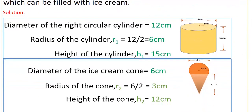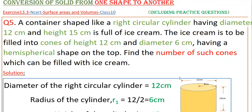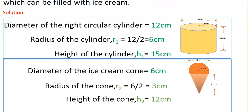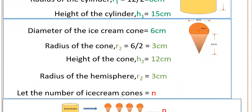So here these are the ice cream cones. The dimensions of the ice cream cone: the diameter is 6 cm, so diameter of the ice cream cone is equal to 6 cm. Therefore radius of the cone R2 is equal to diameter by 2, that is 6 by 2, equal to 3 cm. The height of the cone H2 is equal to 12 cm. This cone includes a hemispherical shape on the top, so this height is excluding the hemispherical shape. The radius of the hemispherical shape as well as the cone is the same, that is R2 equals 3 cm.